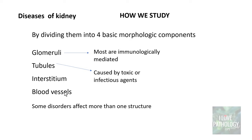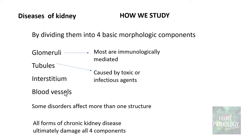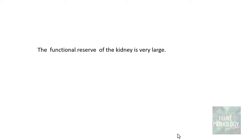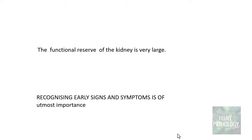Some disorders affect more than one structure — it's not just glomeruli alone; it can affect glomeruli, tubules, interstitium, and so on. All forms of chronic kidney disease ultimately damage all 4 components, and that is what we call end-stage renal disease. We should also realize that the functional reserve of the kidney is very large, such that by the time clinical manifestations are evident, much of the damage would have already occurred. This is why recognizing early signs and symptoms is of utmost clinical importance.